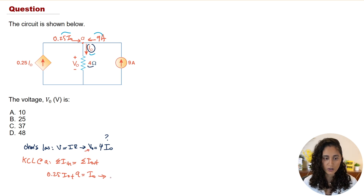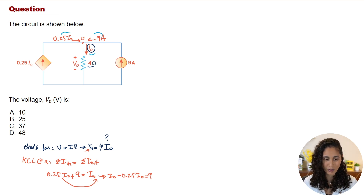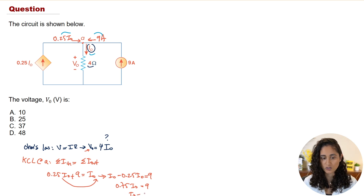Rearranging: bring 0.25·i_naught to the other side — i_naught − 0.25·i_naught = 9, which gives us 0.75·i_naught = 9. Therefore, i_naught = 9 ÷ 0.75 = 12 amps.